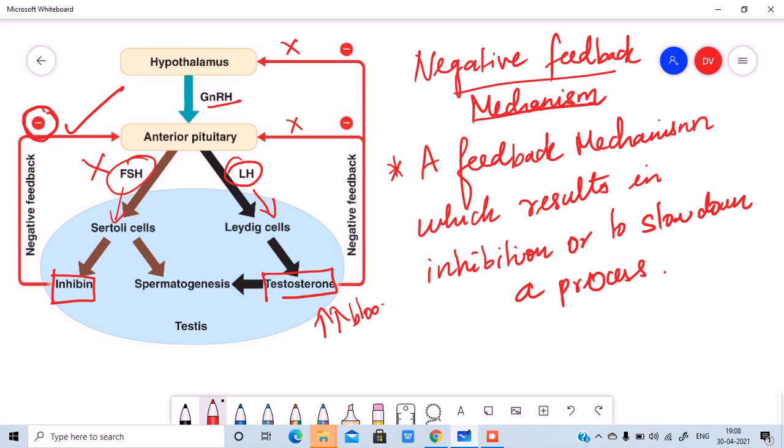If you ask me, is there anything called positive feedback mechanism? Yes. One good example will be the contraction of the uterus, the uterine wall during delivery. Whenever there is more contraction, the posterior pituitary will secrete more oxytocin. More is the contraction, more is the oxytocin secreted. Which means it is a positive feedback mechanism.